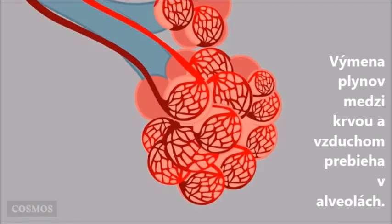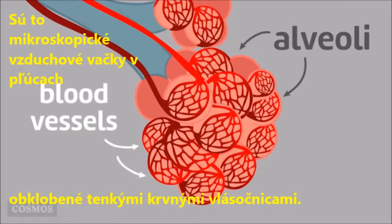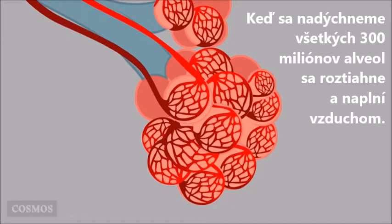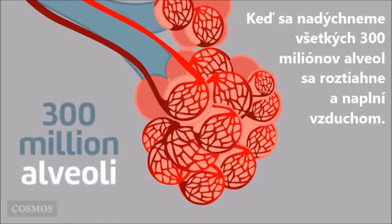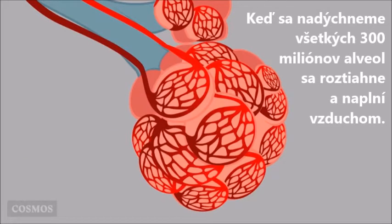The exchange of gases between the blood and the air occurs in the alveoli, microscopic air sacs in the lungs that are surrounded by tiny blood vessels. When we inhale, all 300 million alveoli expand and fill with air.